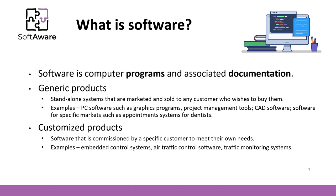If we are talking about software engineering, let's see how software is defined. From a software engineering perspective, software is computer programs and associated documentation. There are two types of software products: generic products that are marketed and sold to any customer who wishes to buy them — in this case, the specification of what the software should do is owned by the software developer and decisions on software changes may be made by the developer — and customized products that are commissioned by a specific customer to meet their own needs, where the specification is owned by the customer and they make decisions on software changes required.